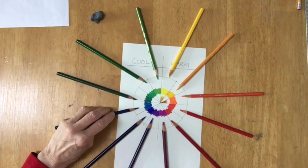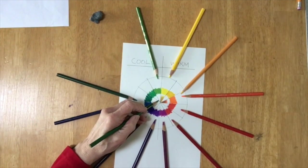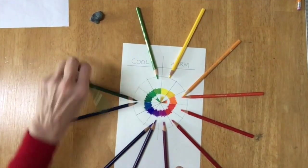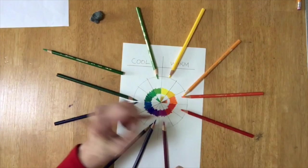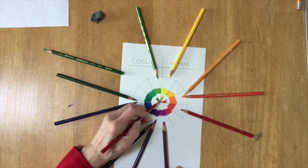So what happens is when they are overlapped, as in the drawing I'm doing right now, you see that they cancel out the properties of each other. So yellow no longer is yellow, violet is no longer violet, but what happens is they create a neutralized color.